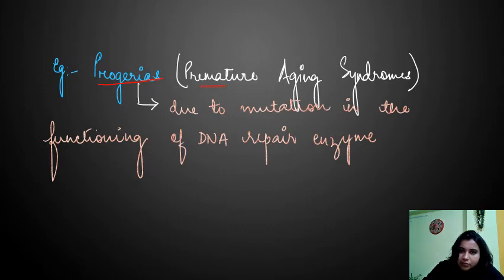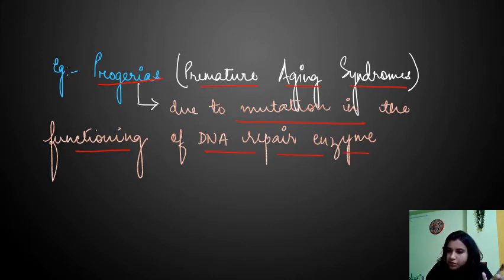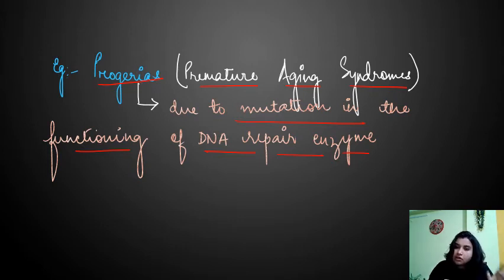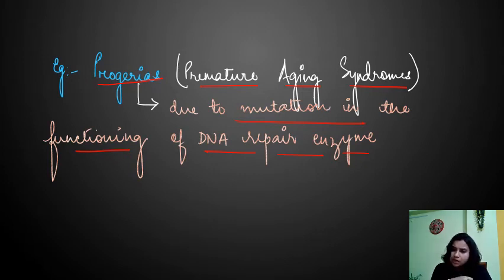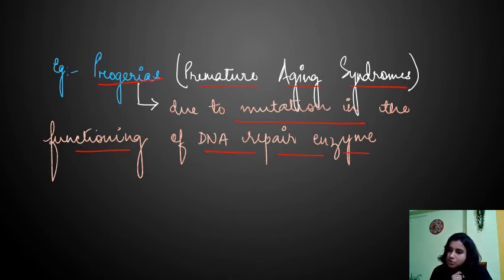Progeria is a premature aging syndrome due to mutation in the functioning of DNA repair enzymes. When there is a mutation in these enzymes, it causes premature aging — meaning after birth, the aging factors start developing immediately. You may have seen the movie 'Paa' — that depicted this disease.